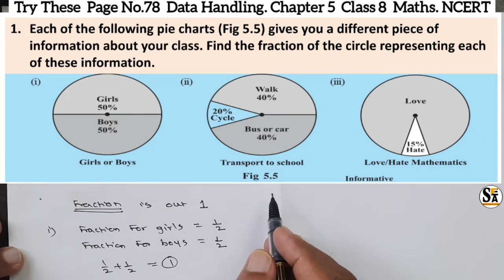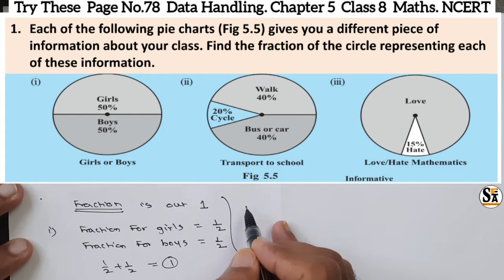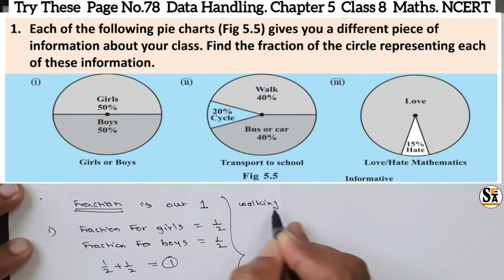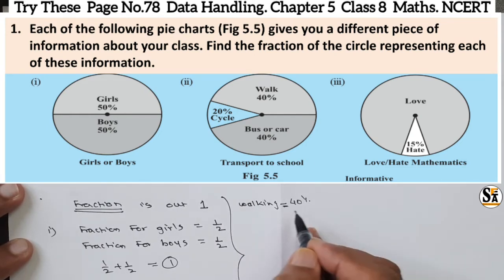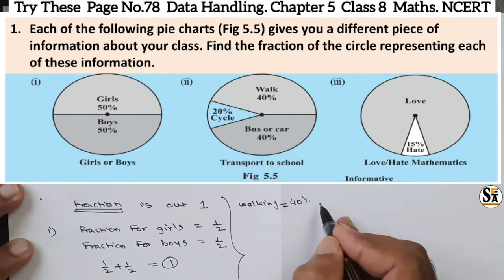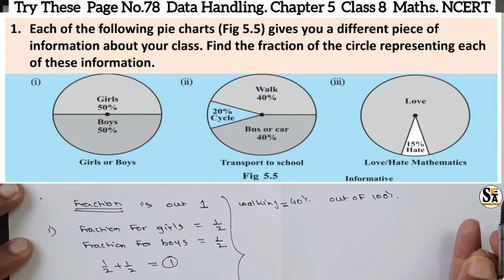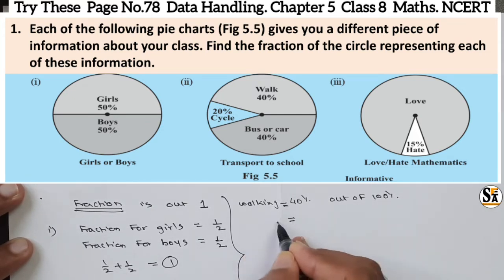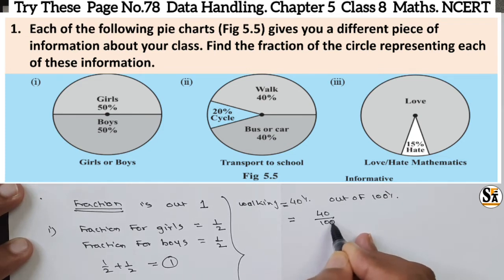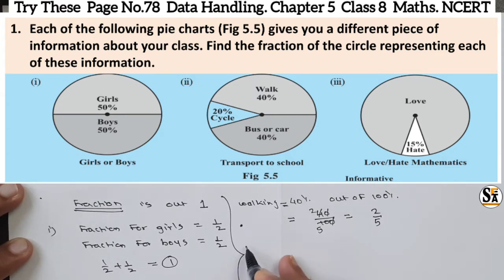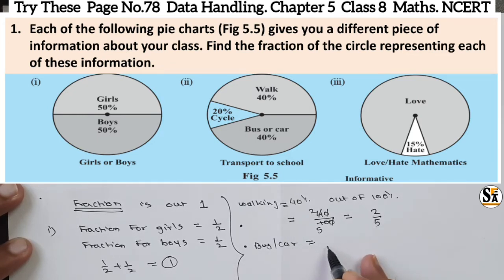In the second circle, transport to school is given. There are three ways: walking, bus or car, and cycle. For walking, 40% is given. Percentage means out of 100, so the fraction for walking will be 40 divided by 100, which simplifies to 2/5. For bus or car, 40% is also given, so the fraction is again 40 divided by 100, which is 2/5.